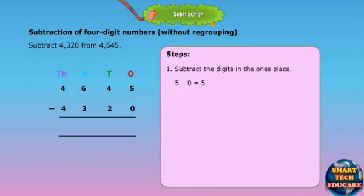Subtract the digits in the ones place. 5 minus 0 is equal to 5. Subtract the digits in the tens place. 4 minus 2 is equal to 2.